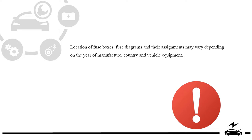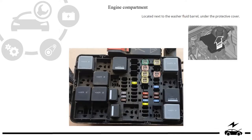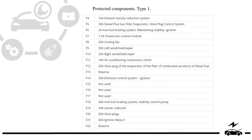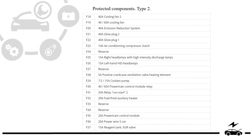Engine compartment fuse box — photo, diagram. Protected components type 1, protected components type 2.